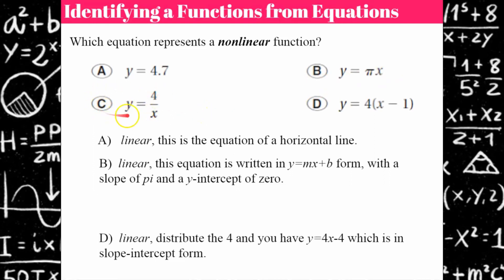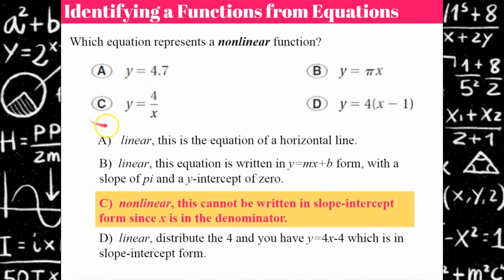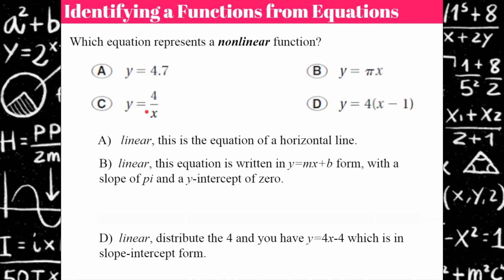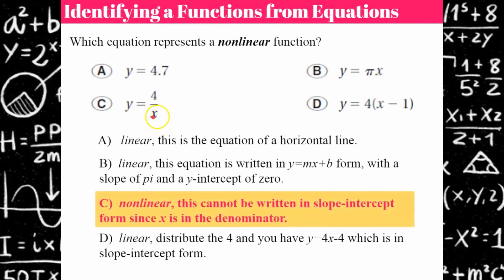D is linear because if I distribute the 4, I get y equals 4x minus 4, which is in slope-intercept form. So C is the odd one out — it's non-linear. It cannot be written in slope-intercept form because x is in the denominator; x actually has an exponent of negative 1. If it's something out of the ordinary from slope-intercept form, then it's non-linear.